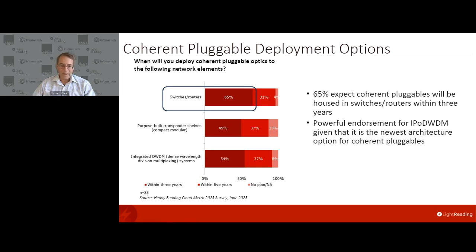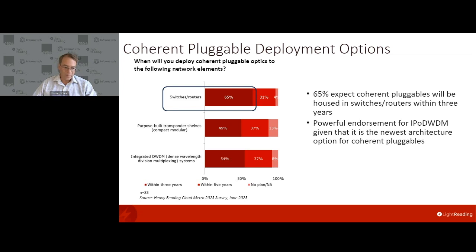What's very different now is that we're seeing real operator pull, which is when something is going to take off — you need the customers genuinely interested. This is just one data point showing how much interest telecom operators and communication service providers have in this type of architecture and their intent to deploy it. This was from a Cloud Metro survey we conducted just this year, and the results are all published. We asked where network operators intend to deploy coherent pluggable optics.